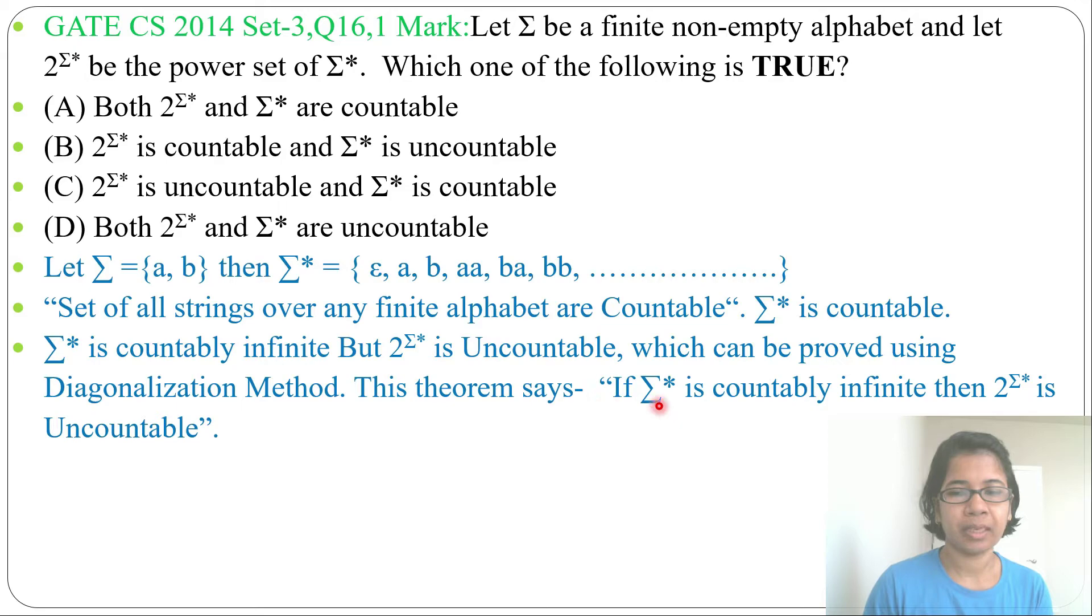This theorem says if sigma star is countably infinite, then 2 power sigma star is uncountable. Just check in which option it is available. It is in option C, that 2 power sigma star is uncountable whereas sigma star is countable.